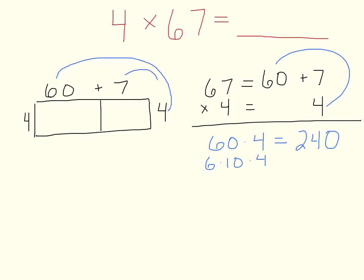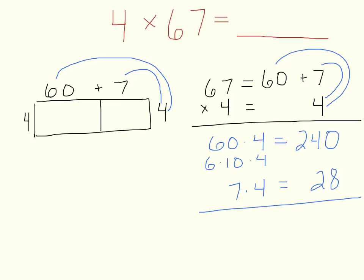Now I've got to roll through and find the product of the ones place. That's 7 groups of 4, and hooray, it's a math fact — I don't even have to think twice. Seven groups of 4, that's 28. And I have the product of the ones place. What I need is the total product. So I add — 4 groups of 67 is 268.